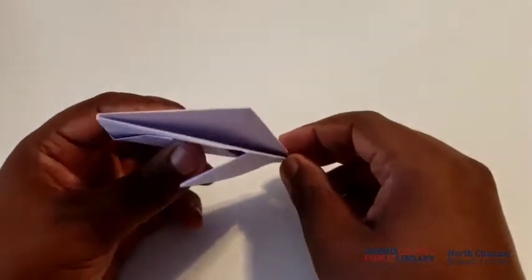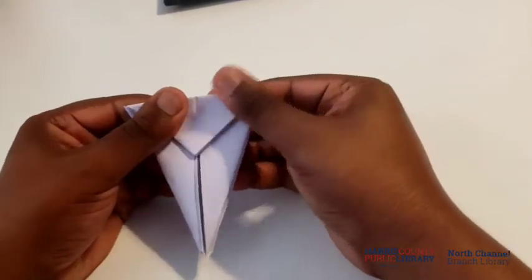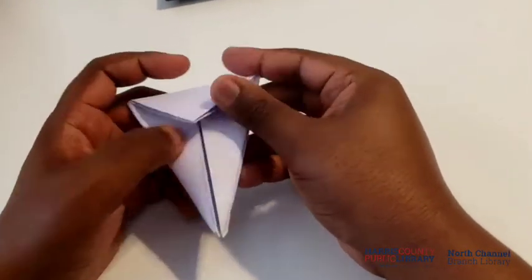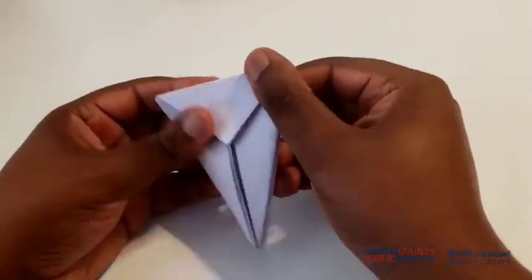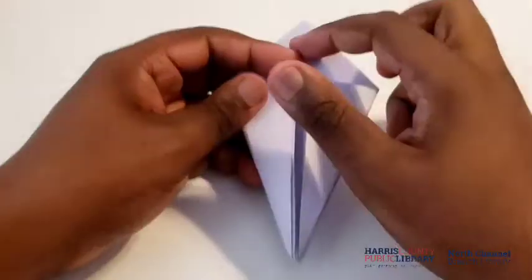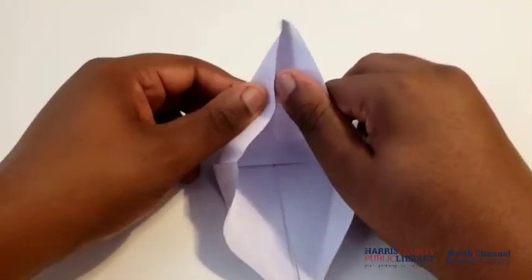Now we're gonna take the top and fold that down just like that until we get to the edges. Crease it, make sure it's nice and creased. We'll need those creases in a moment. Then we're going to unfold and use that crease at the top that we just made.